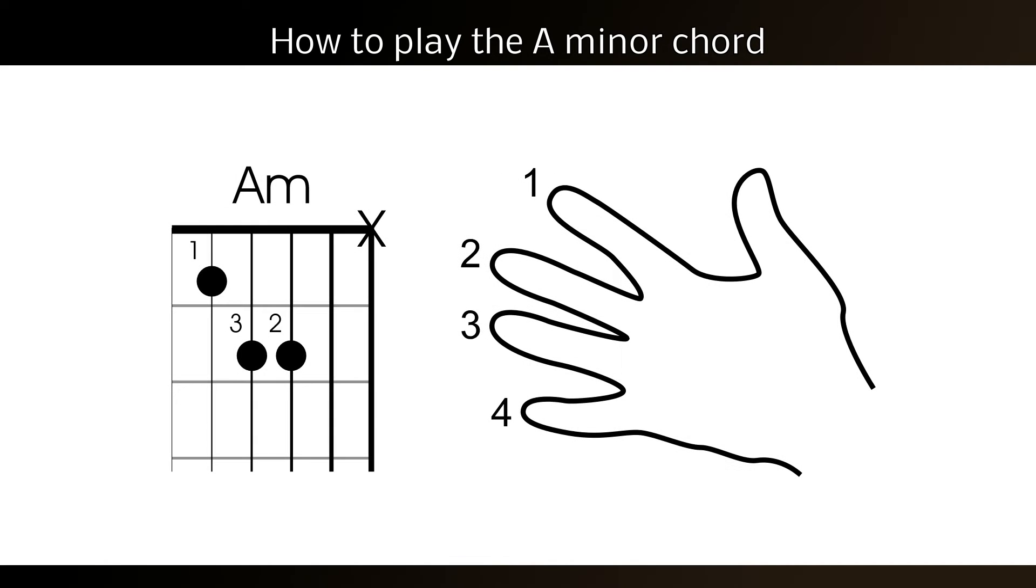Let's play an A minor chord. Firstly, place the first finger on the first fret of the B string. Next, place the second finger in the second fret of the D string. Finally, place the third finger in the second fret of the G string.